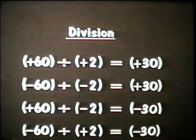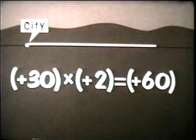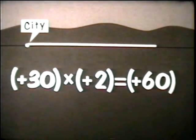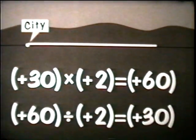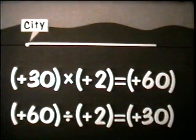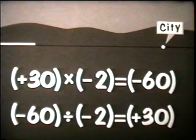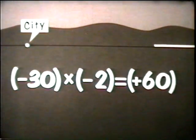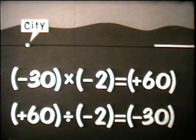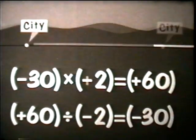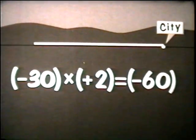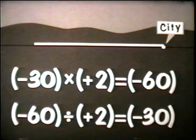The rules for division are the same. To show this, we make use of the fact that multiplication and division are inverse operations. For example, 60 divided by 2 equals 30 because 30 times 2 equals 60. When the 30 and 2 were both positive, the answer was positive 60 — so the quotient of two positive numbers is positive. Because the product of a positive and negative number is negative, the quotient of two numbers with unlike signs is negative. Because the product of two negatives is positive, the quotient of two negative numbers is positive.